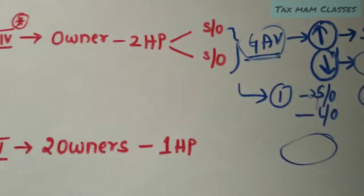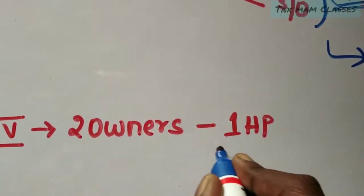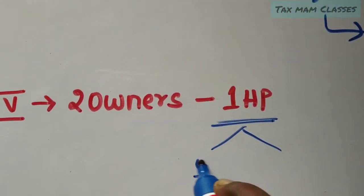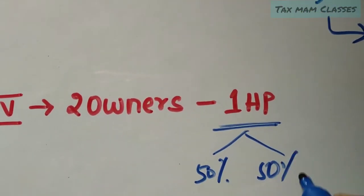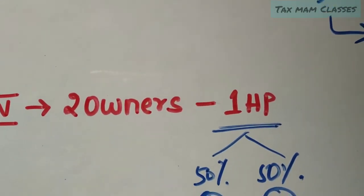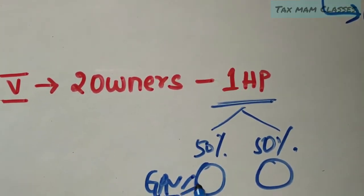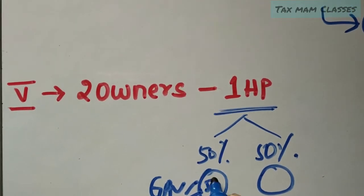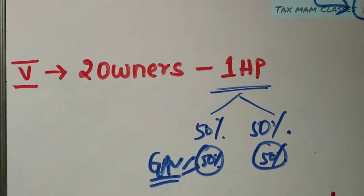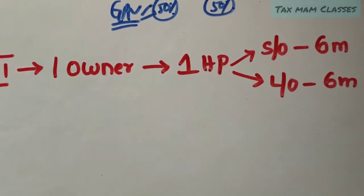In the fifth situation, there are two owners but only one house property. Based on the ownership share — for example, 50-50 percent — the income is calculated accordingly. All values such as gross annual value, fair market value, and standard rent are taken at 50 percent each, and income from house property is computed for each owner.